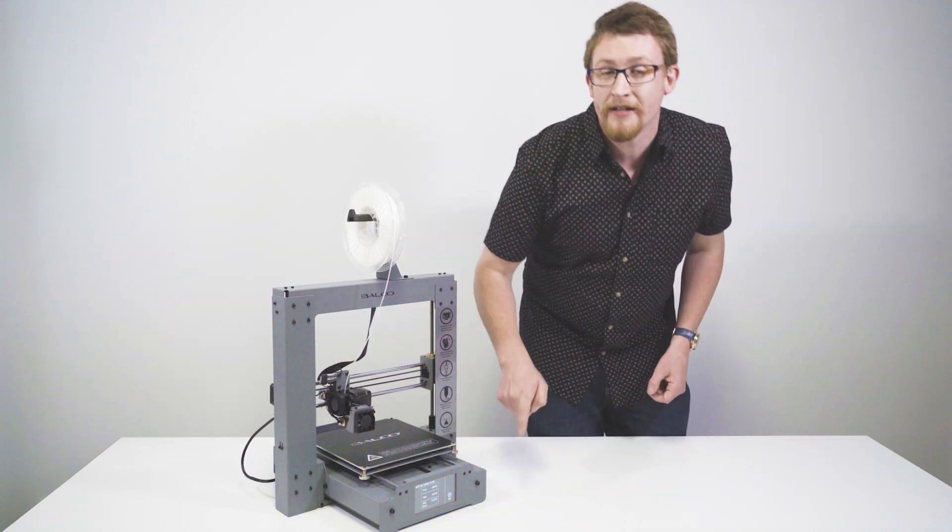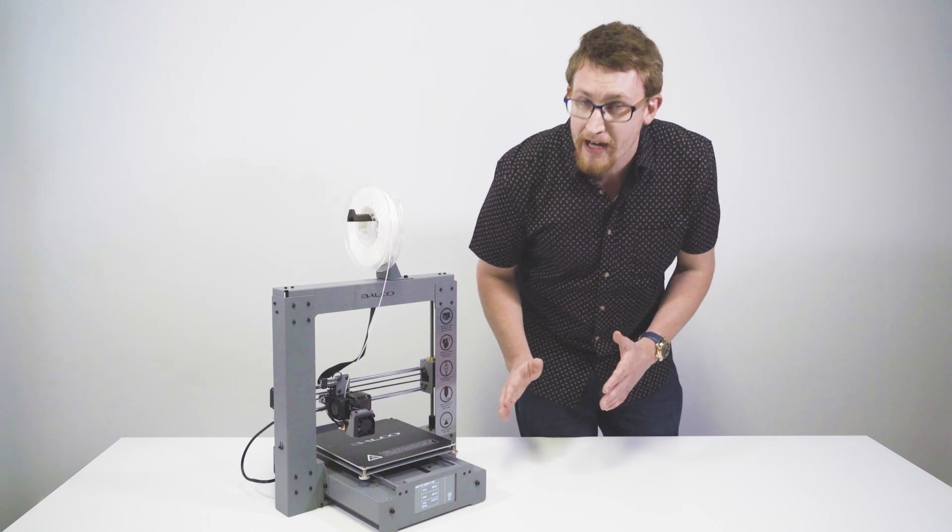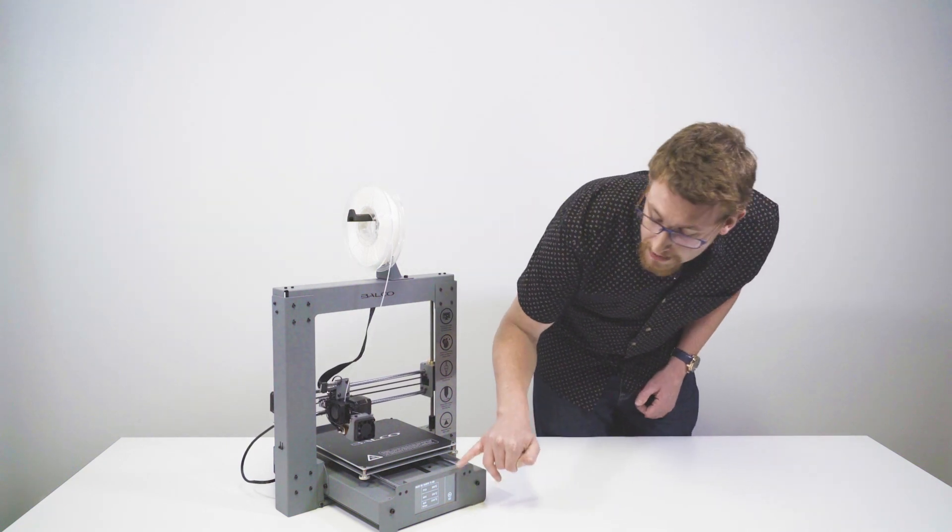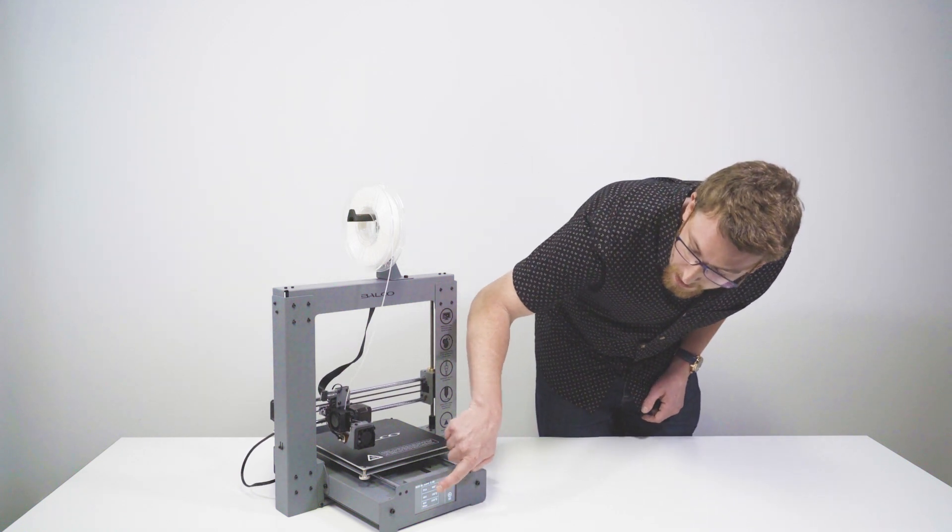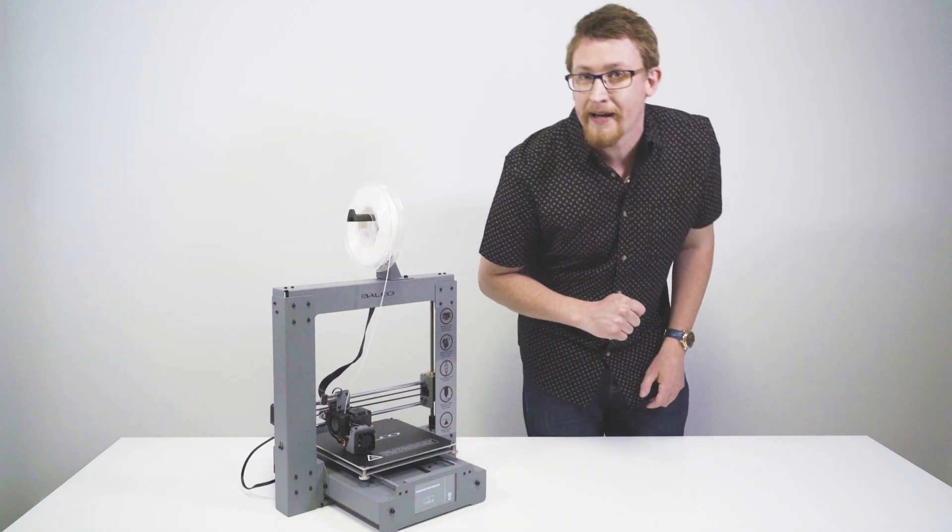Now you'll see two options on here. You're going to have PLA and you're going to have ABS. Both are two different temperatures. So depending on what you're printing with, make sure you select the right one. Today we're selecting PLA.